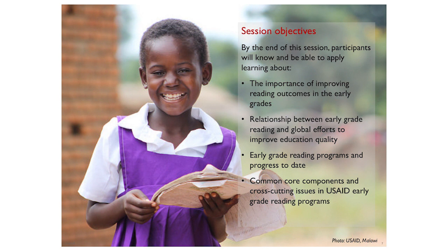Most of the people registered here know that improving early grade reading outcomes for children around the world is a critical foundational goal for education, for community and social development, and for economic development in all countries, particularly in low and middle income countries. We'll look at the importance of improving reading outcomes, how early grade reading fits into larger quality education efforts, the shift from Millennium Development Goals to Sustainable Development Goals, and specific to USAID programming, the common core components, program design, implementation, and cross-cutting issues that need to be addressed in any early grades reading program.